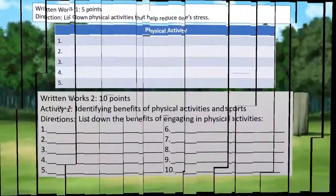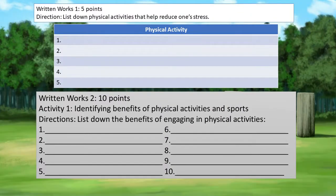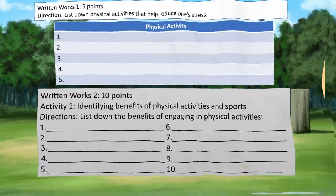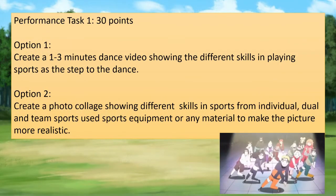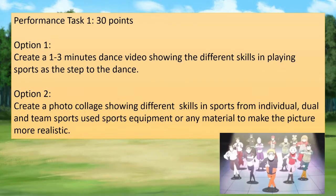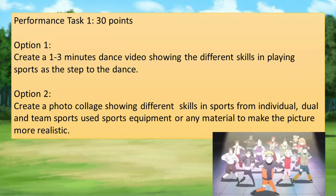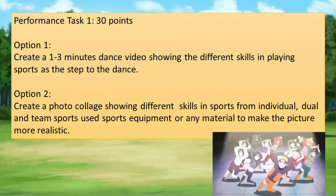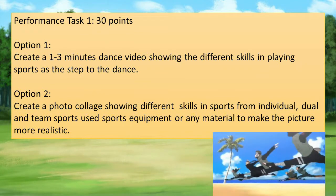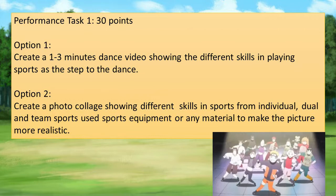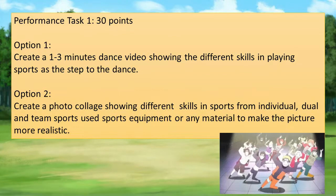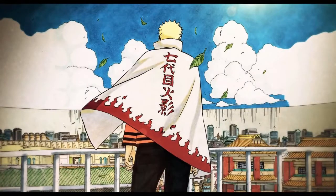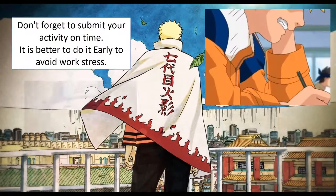For your written task, list down physical activities that help reduce one's stress. The next activity is identifying benefits of physical activities and sports. For your performance task 1, worth 30 points: Option 1 — create a 1 to 3 minute dance video showing different skills in playing sports as steps to the dance. Option 2 — create a photo collage showing different skills in sports from individual, dual, and team sports; use sports equipment or any material to make the picture more realistic. Don't forget to submit your activity on time — it is better to do it early to avoid work stress.